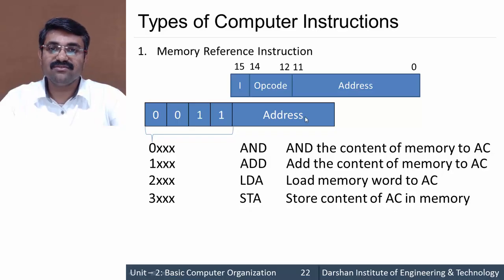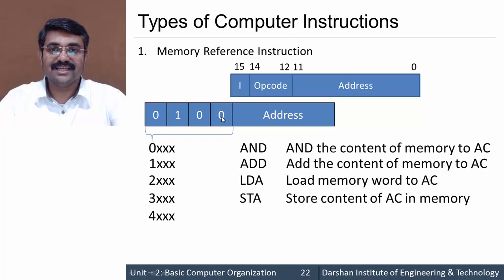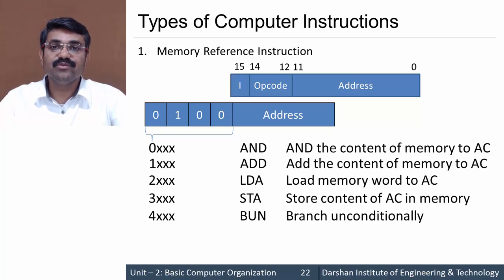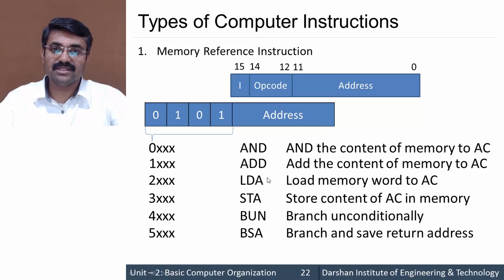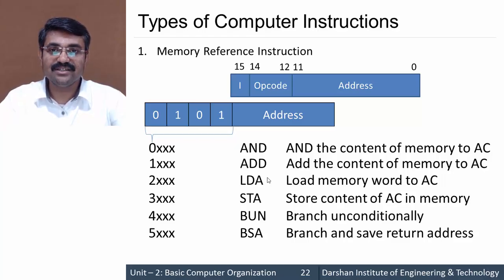The next instruction with opcode 100 gives hex code 4xxx, designated as BUN — branch unconditionally. This is used to jump from one instruction directly to another, changing the sequence of execution. Opcode 101 gives 5xxx, designated as BSA — branch and save return address. Similar to a function call in programming languages, it saves the return address from where the branch was made.